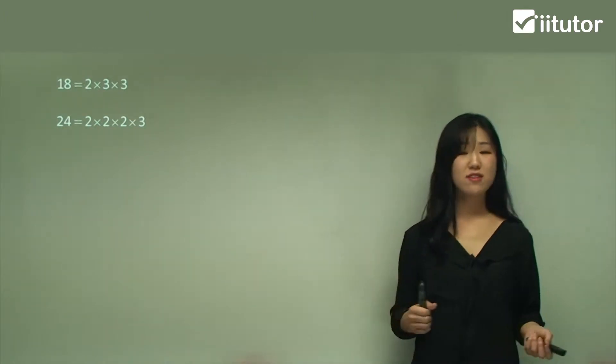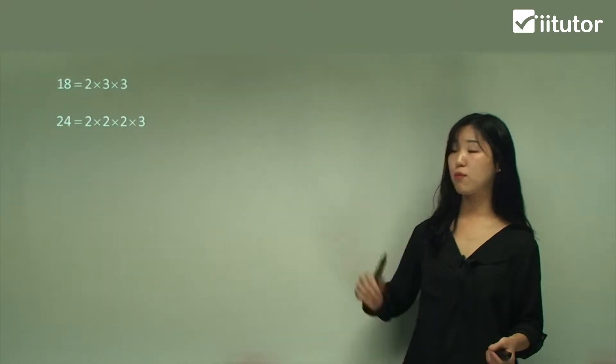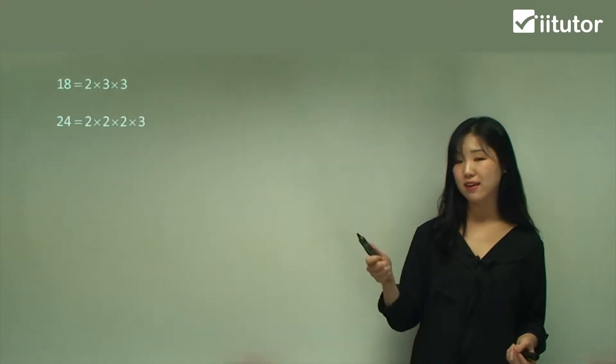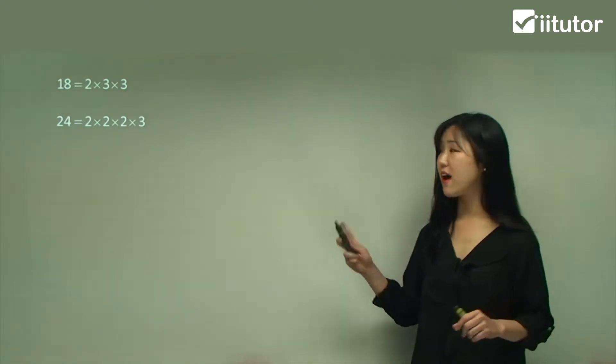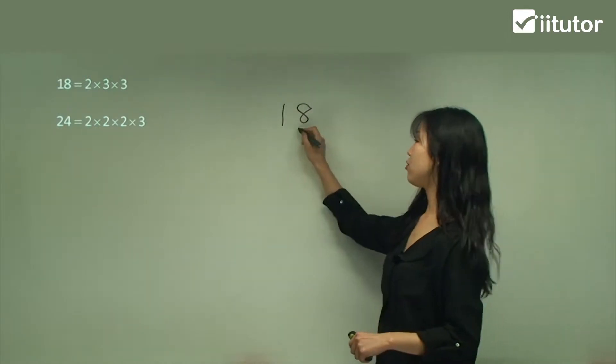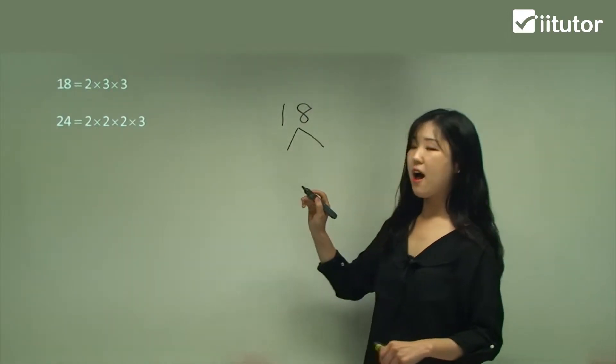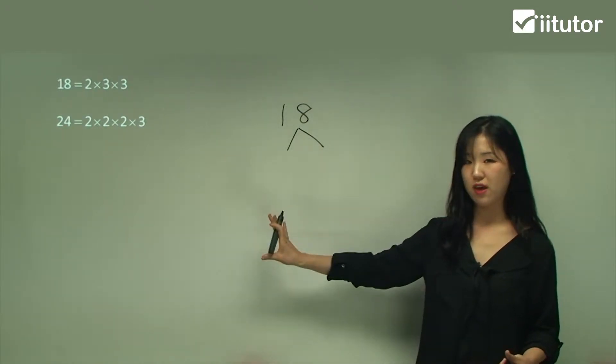I've given you an example here. I've broken down 18 into its prime factors. So 18 is 2 times 3 times 3. If you're not really good at doing this, you might want to use a tree. I put 18 on the top and put two branches, and I try to put my prime factors down my left-hand side just to keep it all together.